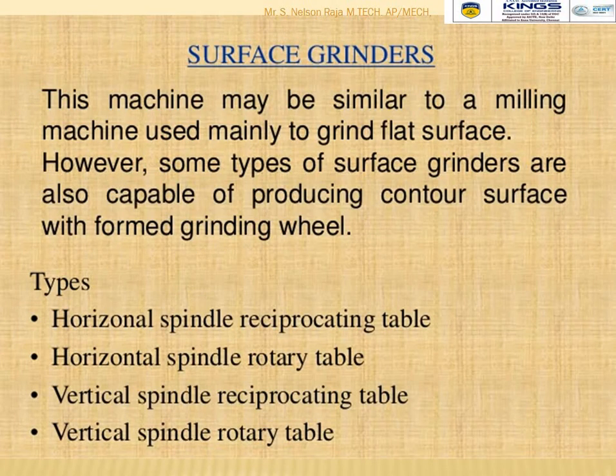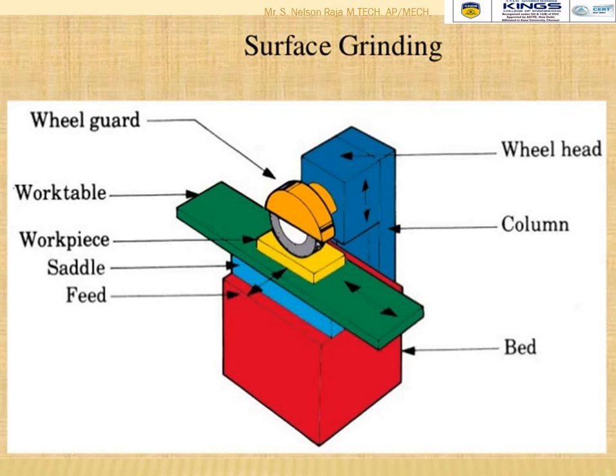The surface grinder is used to improve surface finish and is similar to a milling machine, used mainly for grinding flat surfaces. Some types are also capable of producing contour surfaces without forming the grinding wheel. Types include: horizontal spindle reciprocating table, horizontal spindle rotary table, vertical spindle reciprocating table, and vertical spindle rotary table. Major components include: wheel head, column, bed, feet, saddle, workpiece, work table, and wheel guard.